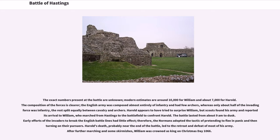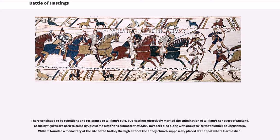Harold appears to have tried to surprise William, but scouts found his army and reported its arrival to William, who marched from Hastings to the battlefield to confront Harold. The battle lasted from about 9 a.m. to dusk. Early efforts of the invaders to break the English battle lines had little effect; therefore, the Normans adopted the tactic of pretending to flee in panic and then turning on their pursuers. Harold's death, probably near the end of the battle, led to the retreat and defeat of most of his army. After further marching and some skirmishes, William was crowned as king on Christmas Day 1066. There continued to be rebellions and resistance to William's rule, but Hastings effectively marked the culmination of William's conquest of England. William founded a monastery at the site of the battle, the high altar of the Abbey Church supposedly placed at the spot where Harold died.